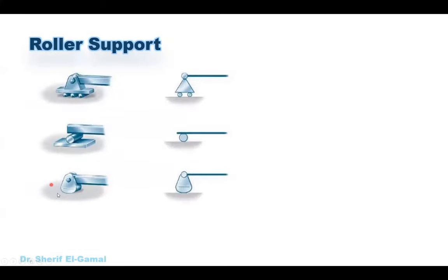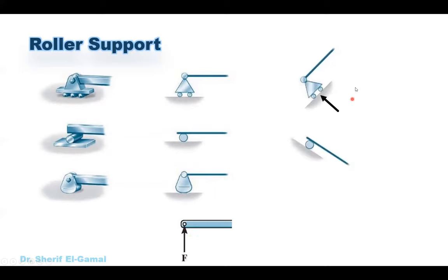For the roller supports you may have them in different shapes. For all of them, because the supporting surface is horizontal, the reaction will be perpendicular to the supporting surface — in this case it will be a vertical reaction. If the supporting surface is inclined, the reaction will be perpendicular to that surface. If you have a roller support where the surface is vertical, the reaction will be a horizontal reaction. Keep in mind it is only one unknown force and this unknown force is always perpendicular to the supporting surface.